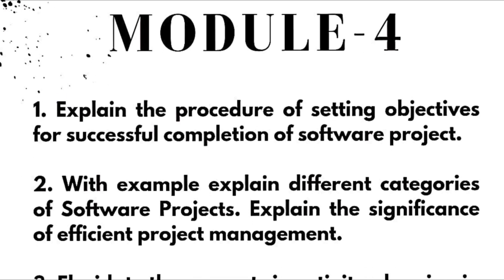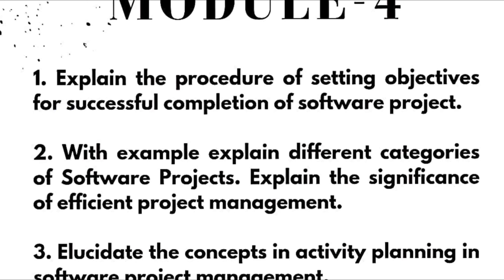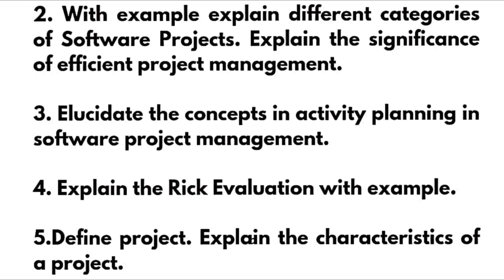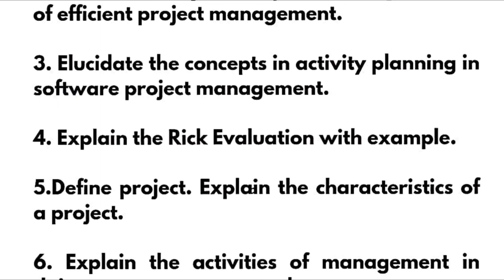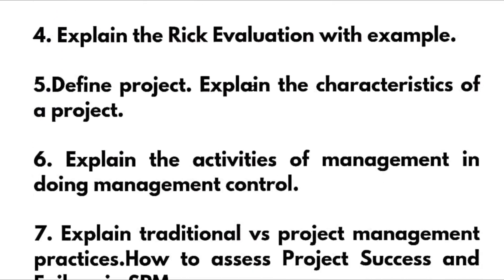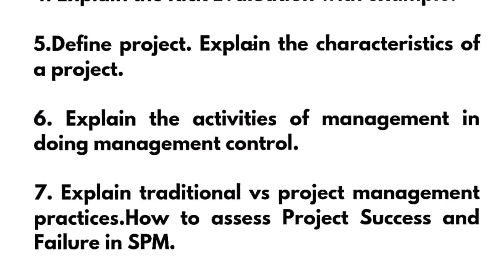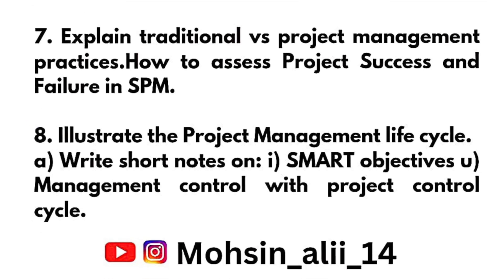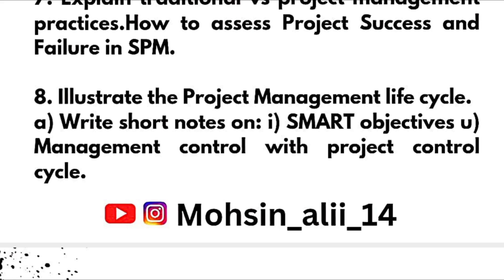Now Module 4. Explain the procedure of setting objectives for successful completion of a software project — a 10-mark question with example. Explain different categories of software projects. Explain the significance of efficient project management. Elucidate the concepts in activity planning in software project management. Explain risk evaluation with example. Define project and explain the characteristics of a project. Explain the activities of management control. Explain traditional versus project management practices. How to assess project success and failure in SPM. Illustrate the project management life cycle. Write a short note on SMART objective management control with project control cycle. These are eight questions from Module 4.